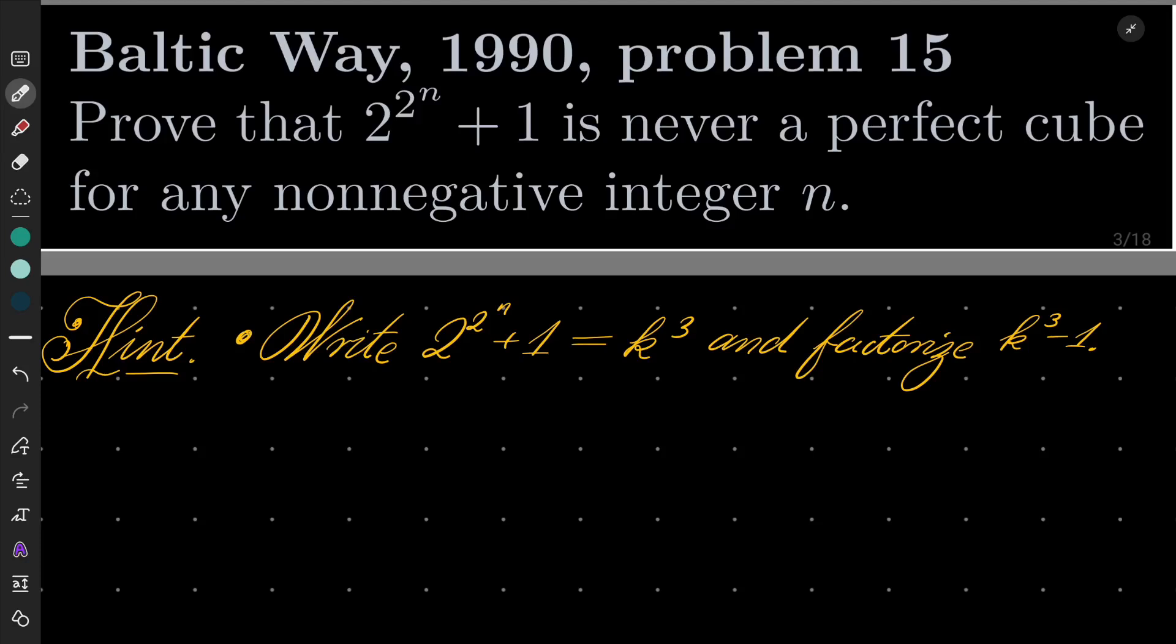Hello friends, in this video I'd like to solve the following problem from the Baltic Way mathematical competition 1990, problem number 15. We wish to prove that 2 to the power 2n plus 1 is never a perfect cube for any non-negative integer n.